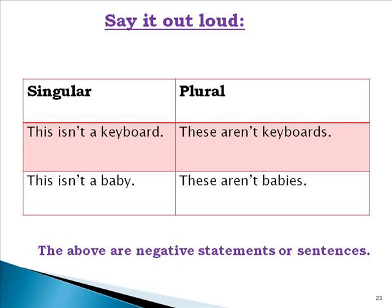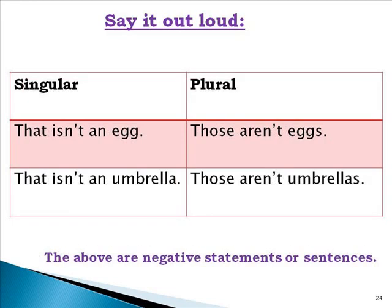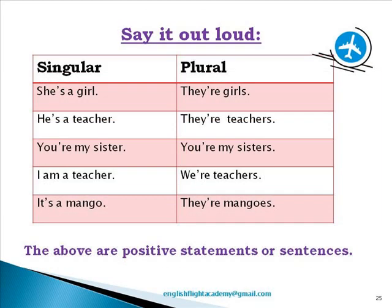Say it out loud — these are negative statements. Singular: this isn't a keyboard. Plural: these aren't keyboards. This isn't a baby. These aren't babies. That isn't an egg. Those aren't eggs. That isn't an umbrella. Those aren't umbrellas. Now using contractions say it out loud: she is a girl / they are girls. He is a teacher / they are teachers. You are my sister / you are my sisters. I am a teacher / we are teachers. It's a mango / they are mangoes.